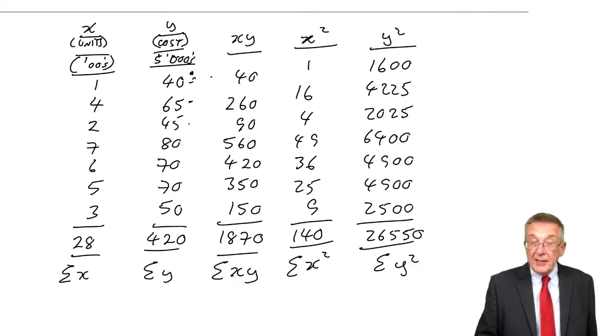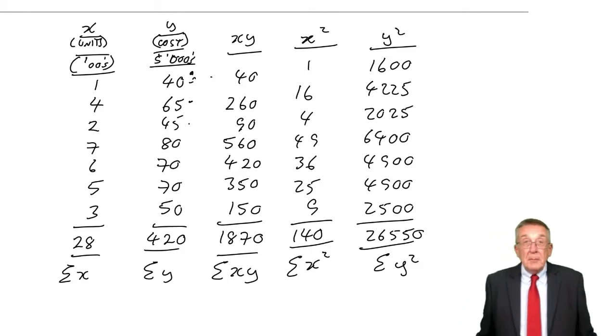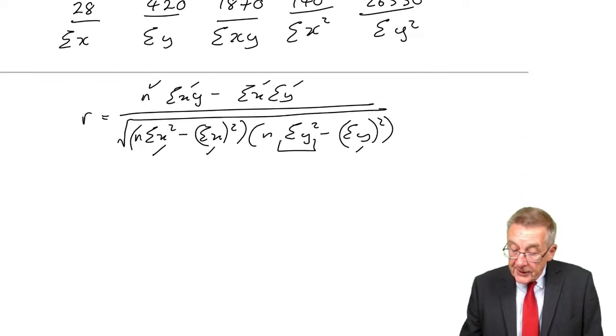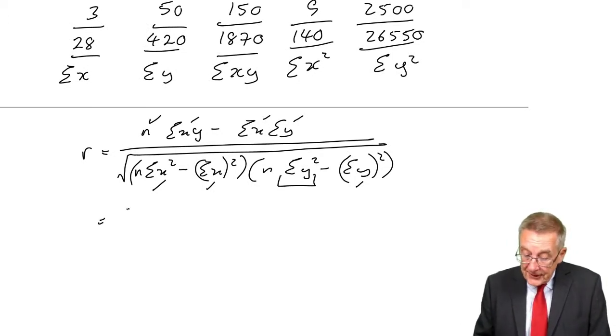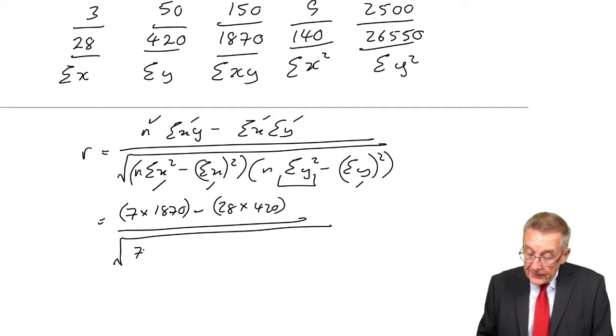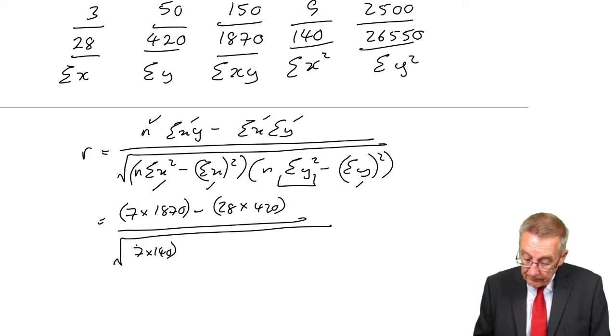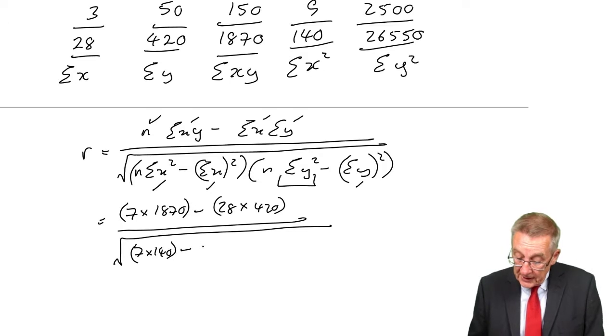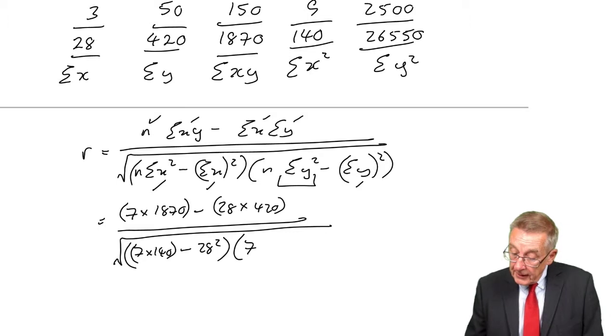The total is 26,550 sigma y squared. This is why I wrote 40 instead of 40,000—you get the right answer still, but 40,000 squared would be enormous. Now let's stick them in the formula. R equals 7 times 1870 minus 28 times 420, divided by the square root of 7 times 140 minus 28 squared, times 7 times 26,550 minus 420 squared.